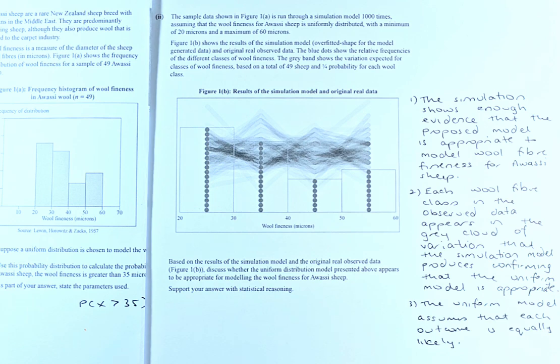So based on the result of the simulation model and the original observed data, figure 1b, discuss whether the uniform distribution model presented above appears to be appropriate for modelling wool fineness for the awasi sheet. Support your answers with statistical reasoning.